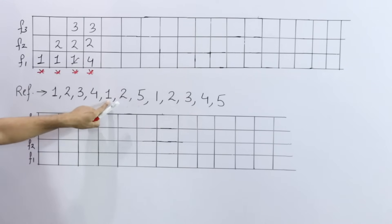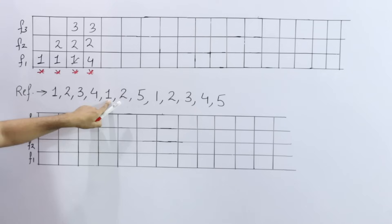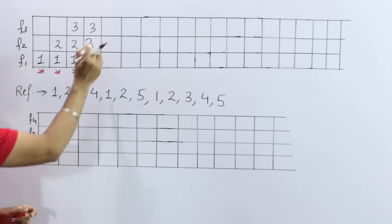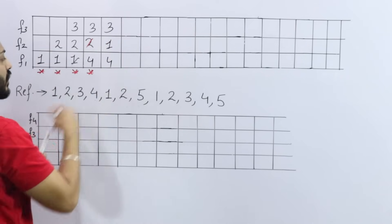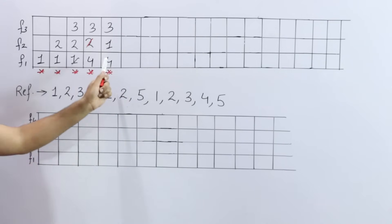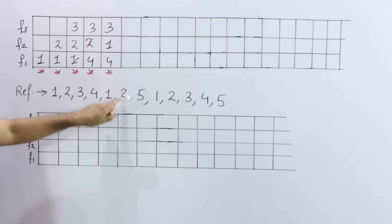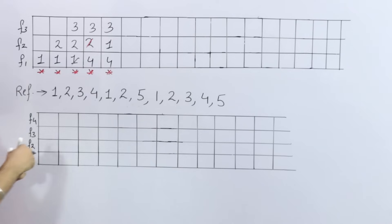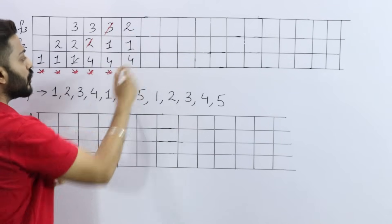Next, page number 1 is requested. Is page 1 present? No, we already replaced it. So we must replace again. After frame 1, the next in sequence is frame 2. So we replace frame 2's content with page 1 — this is a page fault. Then page number 2 is requested. Page 2 is also absent, so we replace frame 3 with page 2 — another page fault.